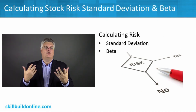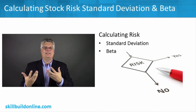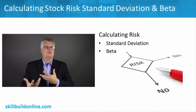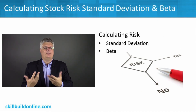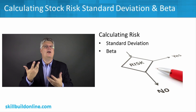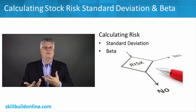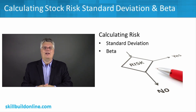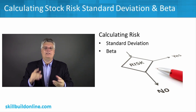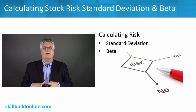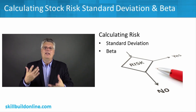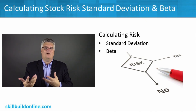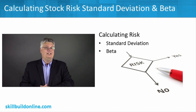Standard deviation and beta are both good ways to assess whether an investment is risky and provide a numerical measure you can use. In the next lesson, let's take a look at a couple of mutual funds and a couple of individual stocks so you can see where to find this information and what it looks like in action.